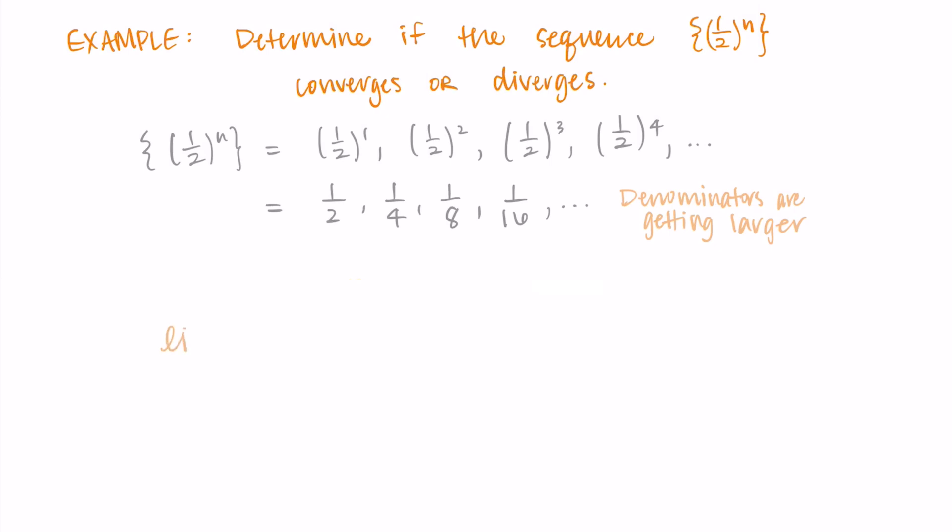But we can do this formally using a limit. So I'm going to take the limit as n approaches infinity of 1 half to the n power. I'll just rewrite this as 1 to the n divided by 2 to the n, with the limit still there. 1 to the n is just 1. Then I can consider what happens to 2 to the n as we approach infinity. So 2 to some power, as that power gets larger, that value is just going to get bigger. So 2 to the n goes to infinity as n goes to infinity.